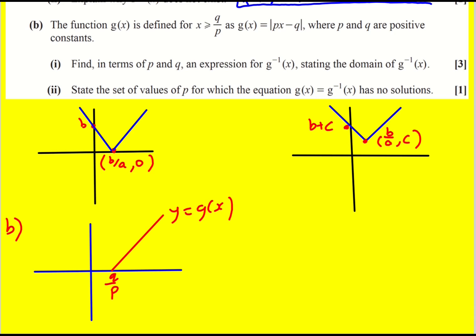We're asked to find in terms of p and q an expression for the inverse, stating the domain of the inverse. So the domain of the inverse is actually the range of the original function. It's worth looking into that. We can see from the graph that g(x) is always going to be greater or equal to zero.